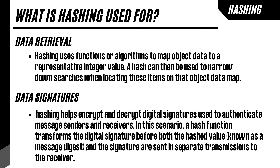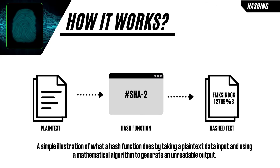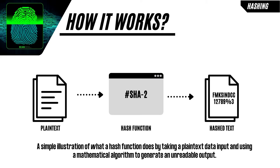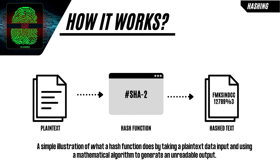Hashing is also used for data signatures. Hashing helps encrypt and decrypt digital signatures used to authenticate message senders and receivers. In this scenario, a hash function transforms the digital signature before both the hashed value, known as a message digest, and the signature are sent in separate transmissions to the receiver. Here is a simple illustration of what a hash function does by taking plain text data input and using a mathematical algorithm to generate an unreadable output.